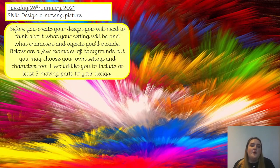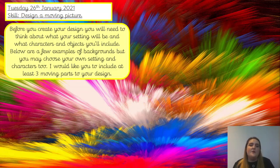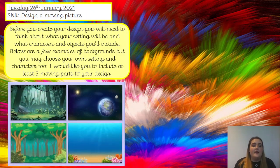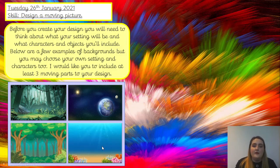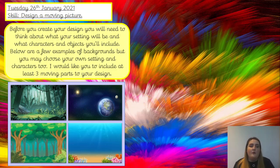Before you create your design, now we've thought about our design criteria, I would like you to pause in a couple of moments and think: what setting will you use and what characters will you include? I'd like you to include at least three moving parts, so you need to think of at least three characters or objects that will go on to your scene. Here are some examples: we've got a jungle, space, a forest like a woodland, or under the sea. They're just examples — you might come up with your own idea.